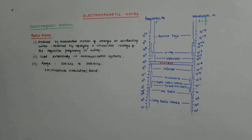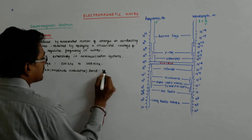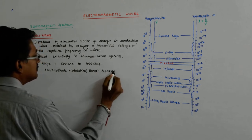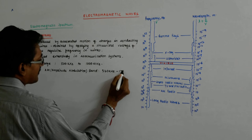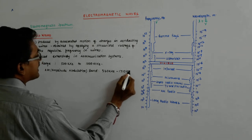AM band ranges from 530 kilohertz to 710 kilohertz.